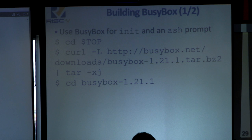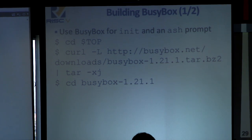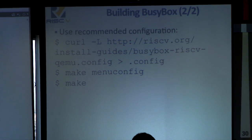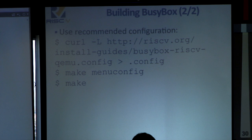Next we need a copy of BusyBox. Pokey, which Martin will talk about, will get you a much nicer set of tools. But to build our basic image we use BusyBox to get init and an ash prompt. We go back to our top directory, pull the BusyBox sources, use the recommended configuration from the RISC-V website, run make menuconfig to make any changes, then type make. This gives us the BusyBox binary we'll copy into our root disk image.